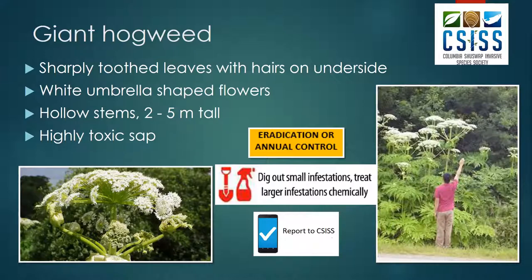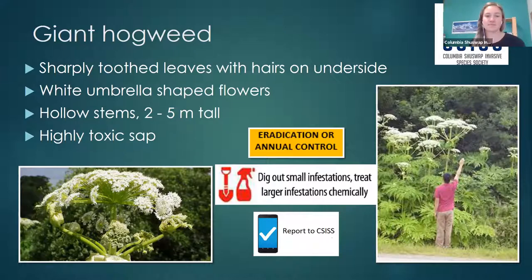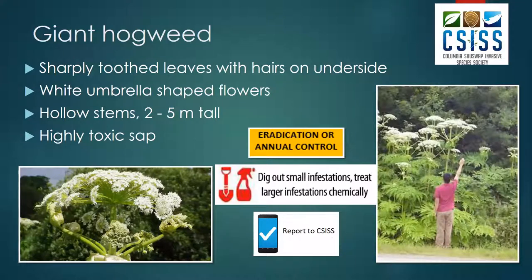Regarding what areas in BC giant hogweed infests: mostly Vancouver Island and the Lower Mainland, but we do have a couple of infestations in the Columbia Shuswap region. There are ways to find out where invasive plants are around the province, which we'll cover a bit later.